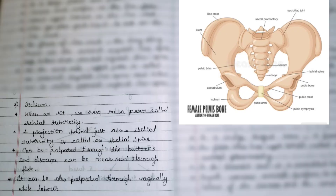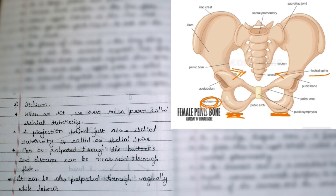In the ischium, this bone is very important. This part is called the ischial tuberosity — when we sit, we rest on the ischial tuberosity. In the posterior region you can also see a pointy bone called the ischial spine.